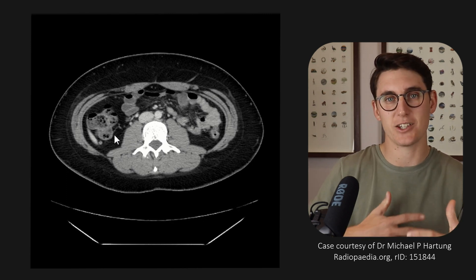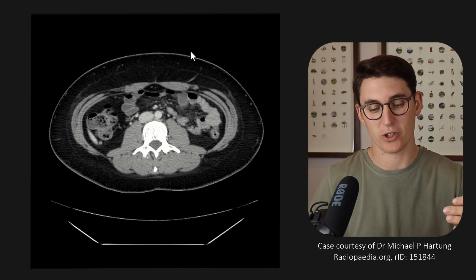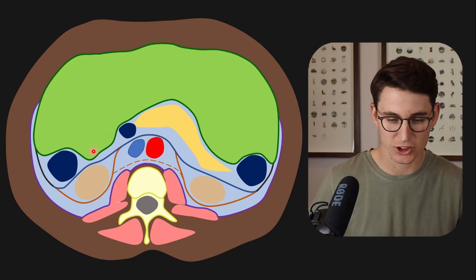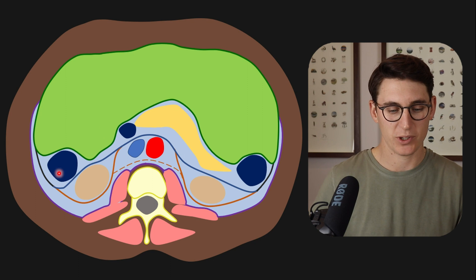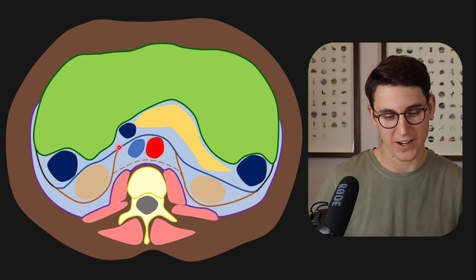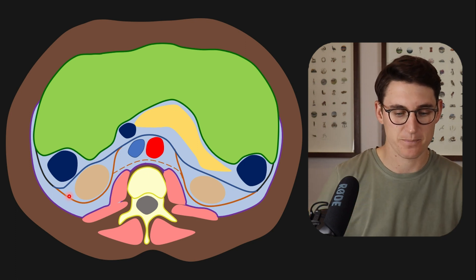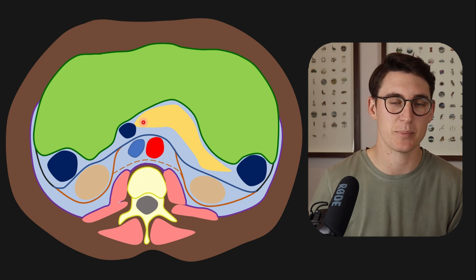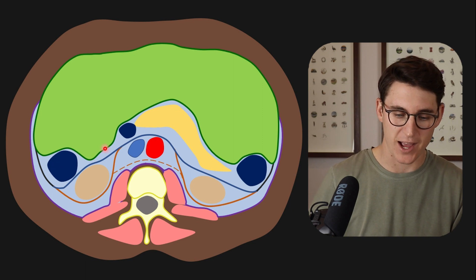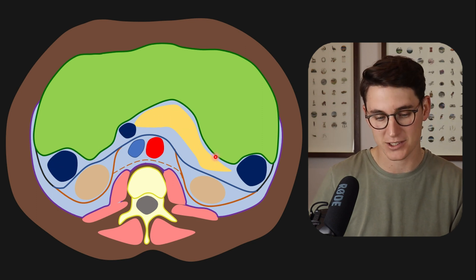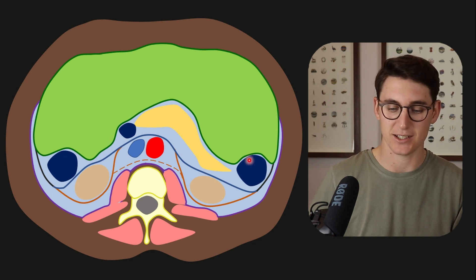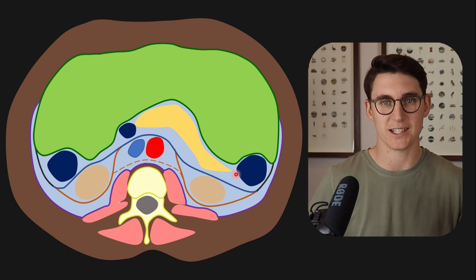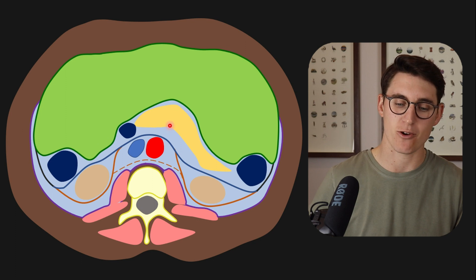Let's go and look at how we can divide the retroperitoneum into three distinct spaces, going back to our schematic. Everything shaded in light blue is our retroperitoneum, and we can divide it using fascial planes that separate it into different spaces. There's an anterior space known as our anterior pararenal space, which contains our pancreas, our duodenum, as well as our ascending and descending colons. These are all gastrointestinal structures, so some people like to call it the gastrointestinal space. This is our anterior pararenal space.